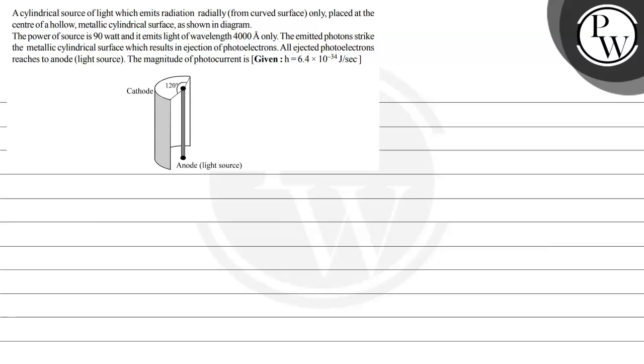A cylindrical source of light which emits radiation radially from a curved surface only is placed at the center of a hollow metallic cylindrical surface as shown in the diagram. The power source is 90 watt and it emits light of wavelength 4000 angstrom only. The emitted photons strike the metallic cylindrical surface which results in ejection of photoelectrons. All ejected photoelectrons reach the anode, that is the light source.